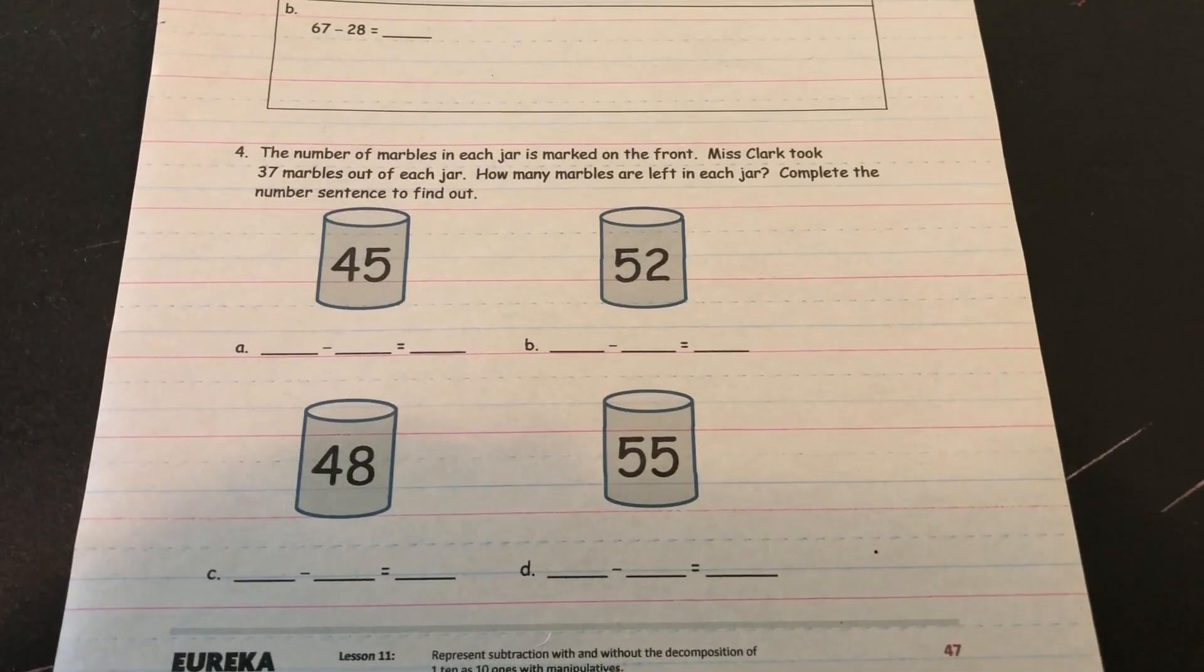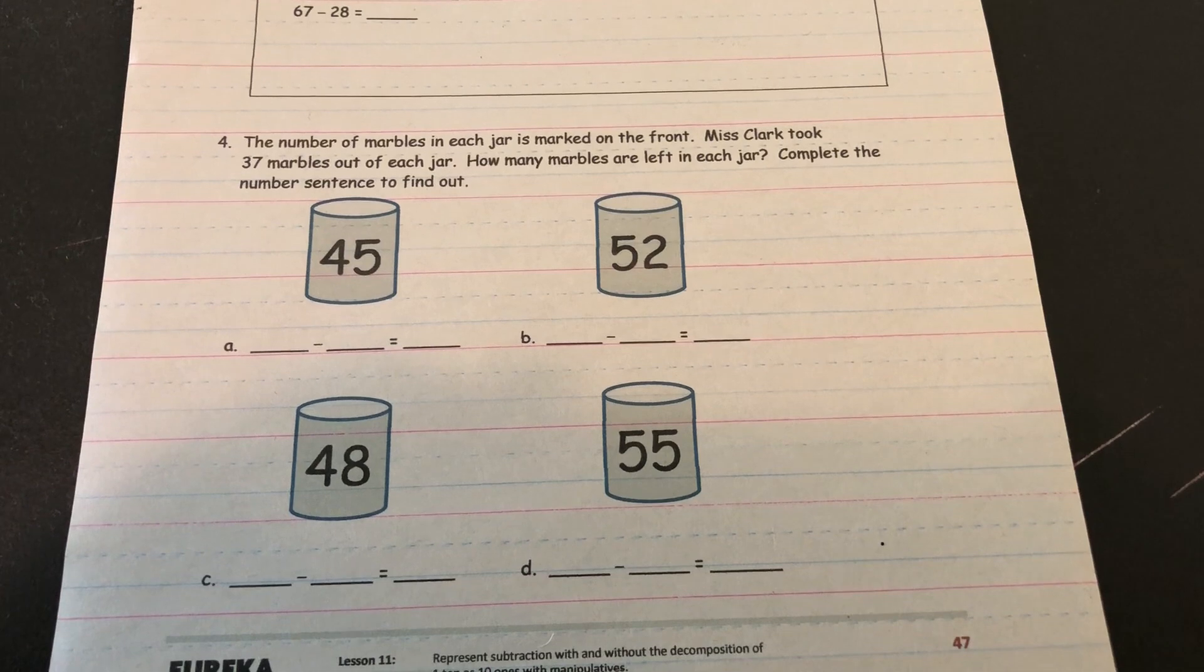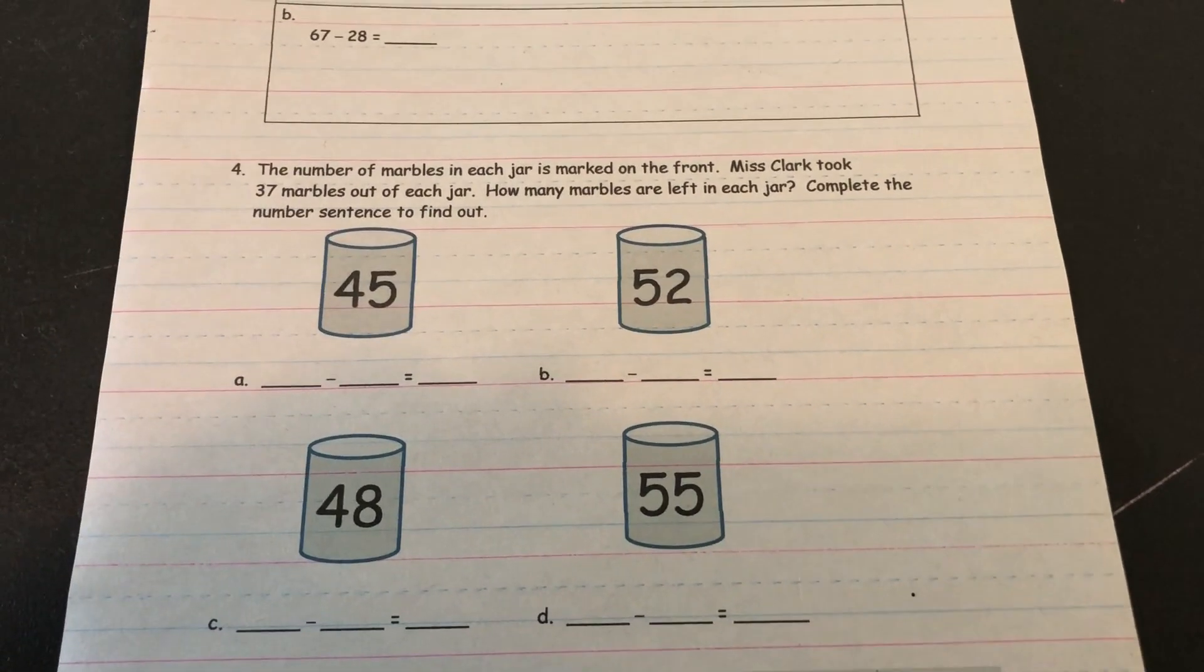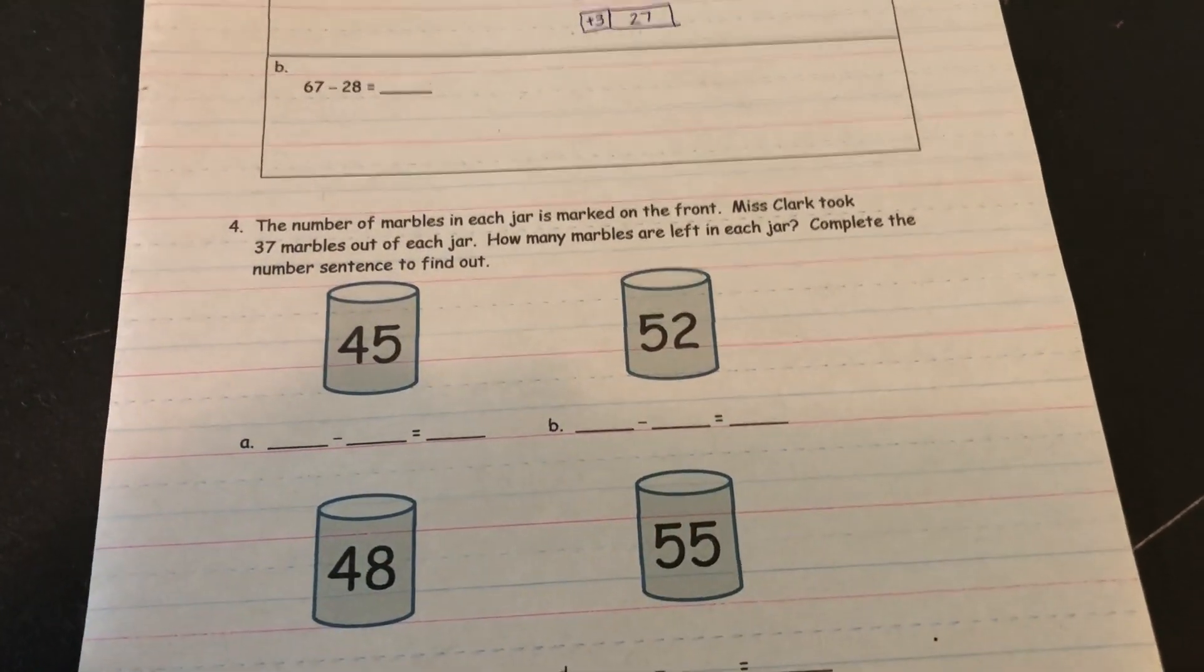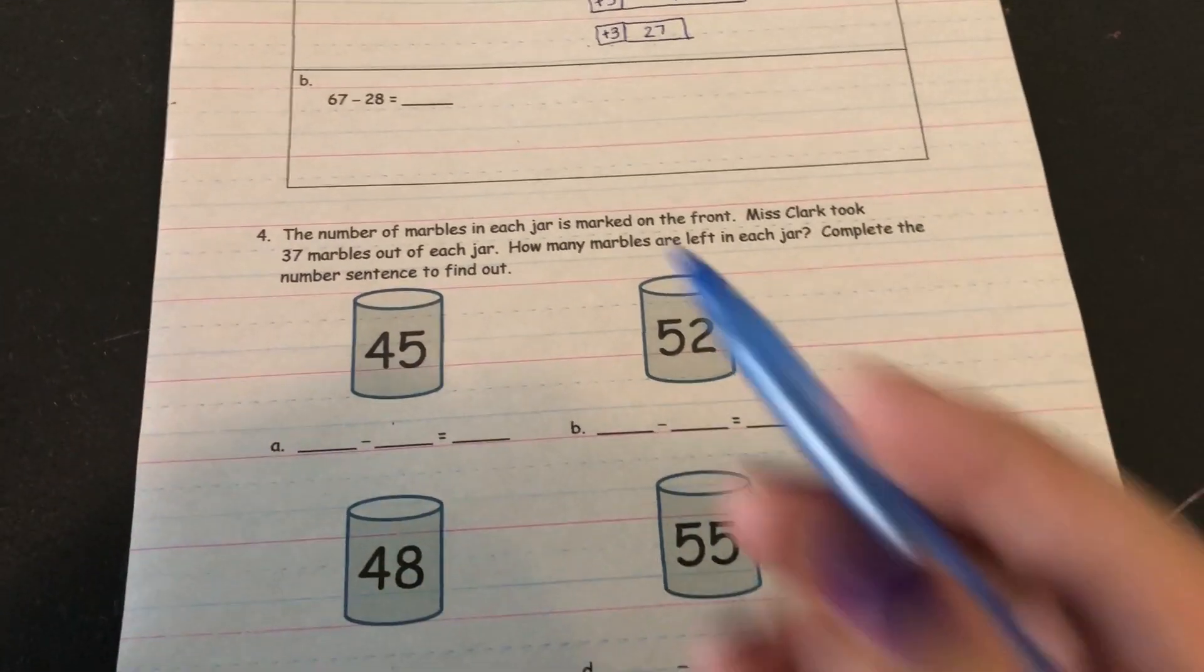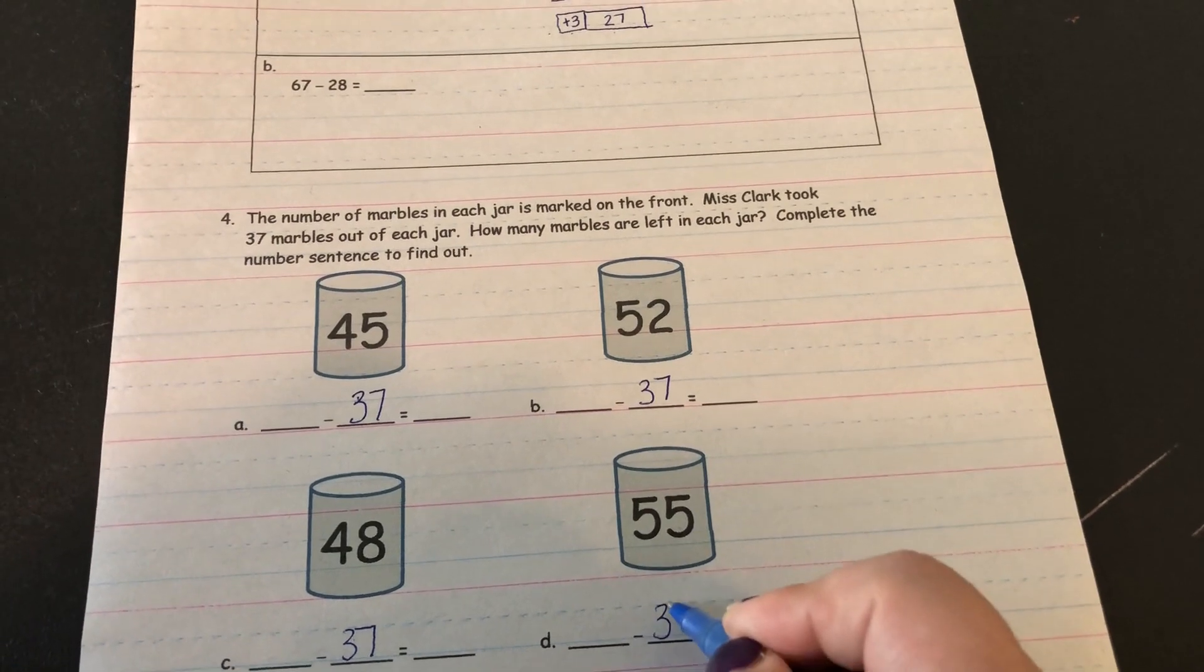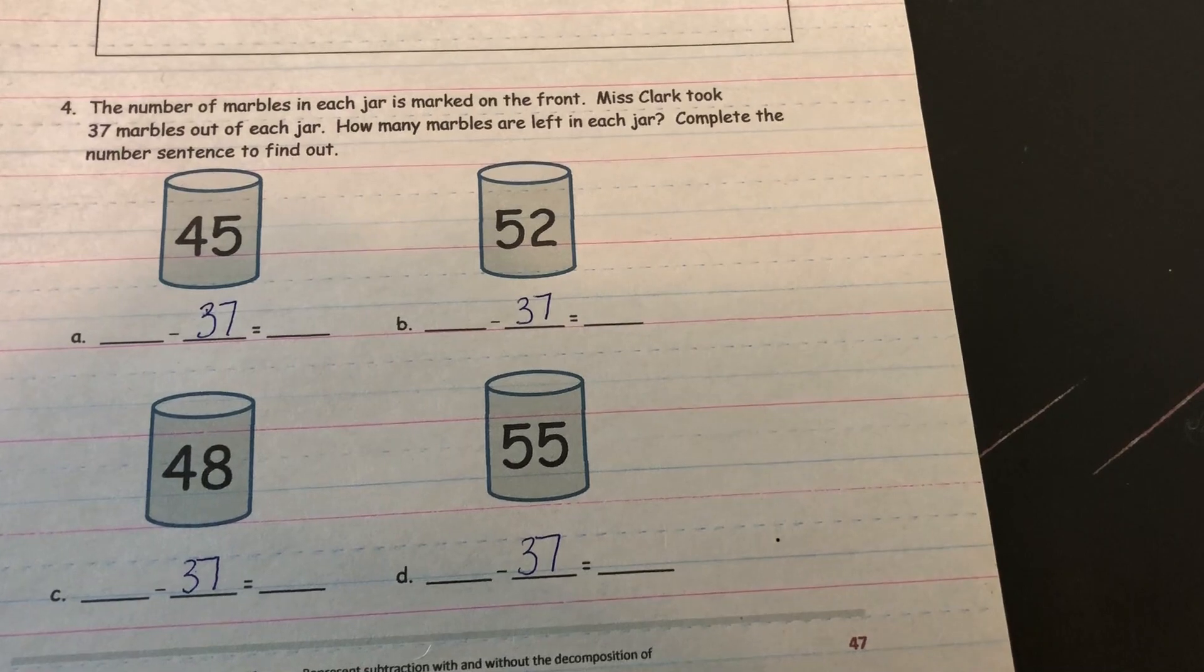Last section says the number of marbles in each jar is marked on the front. Miss Clark took 37 marbles out of each jar. How many marbles are left in the jar? Complete the number sentence to find out. All right. So I know that Miss Clark takes out 37 marbles from each jar. So for each one of these, it's going to be minus 37. So I'm just going to fill those in because it says that she takes out 37 each time.